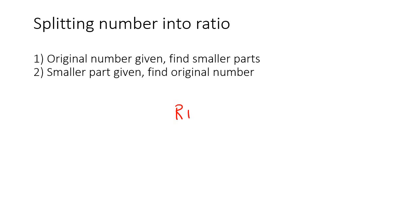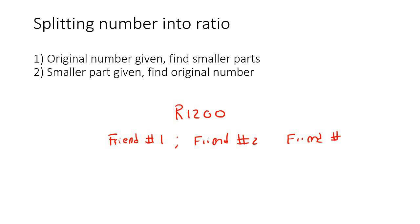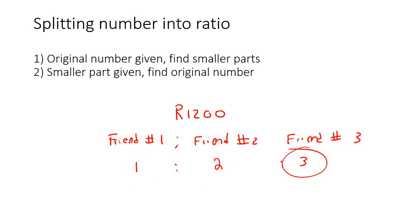Let's say you have 1,200 Rand and you need to split that up between you and three of your friends — friend number one, friend number two and friend number three. Let's say you're going to split it up in the ratio of one to two to three. So this person gets one part, this person gets two parts and this person gets three parts. What the question asks you is to find out how much each friend gets. That's what we're going to do in section number one, where the original number is given.